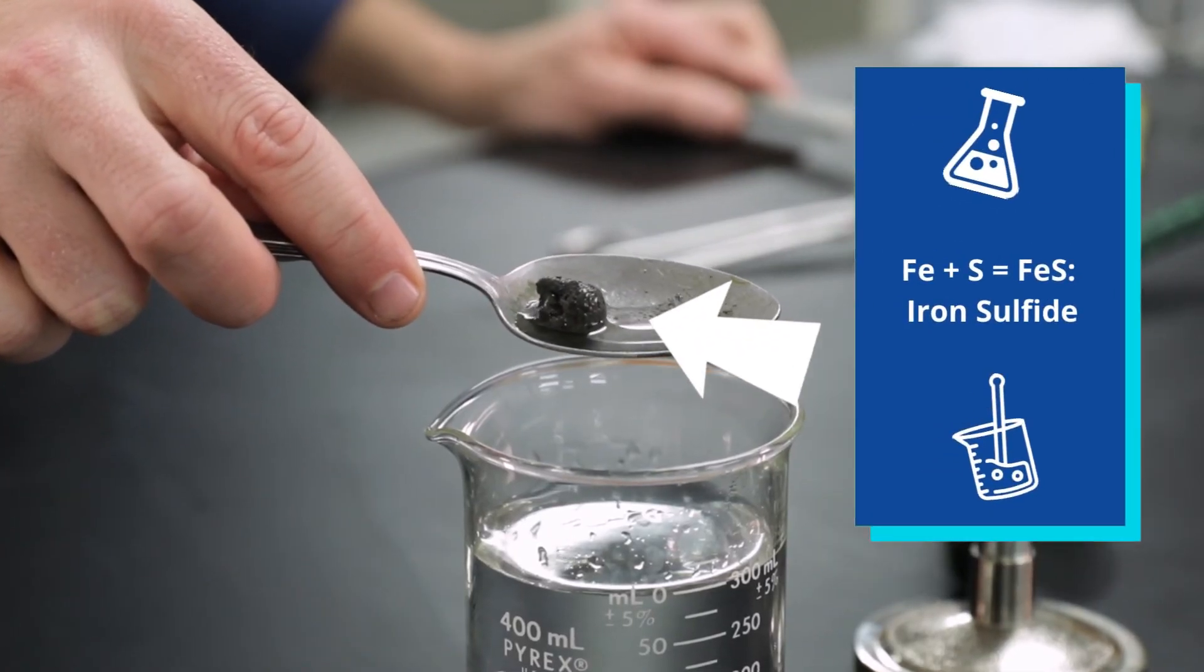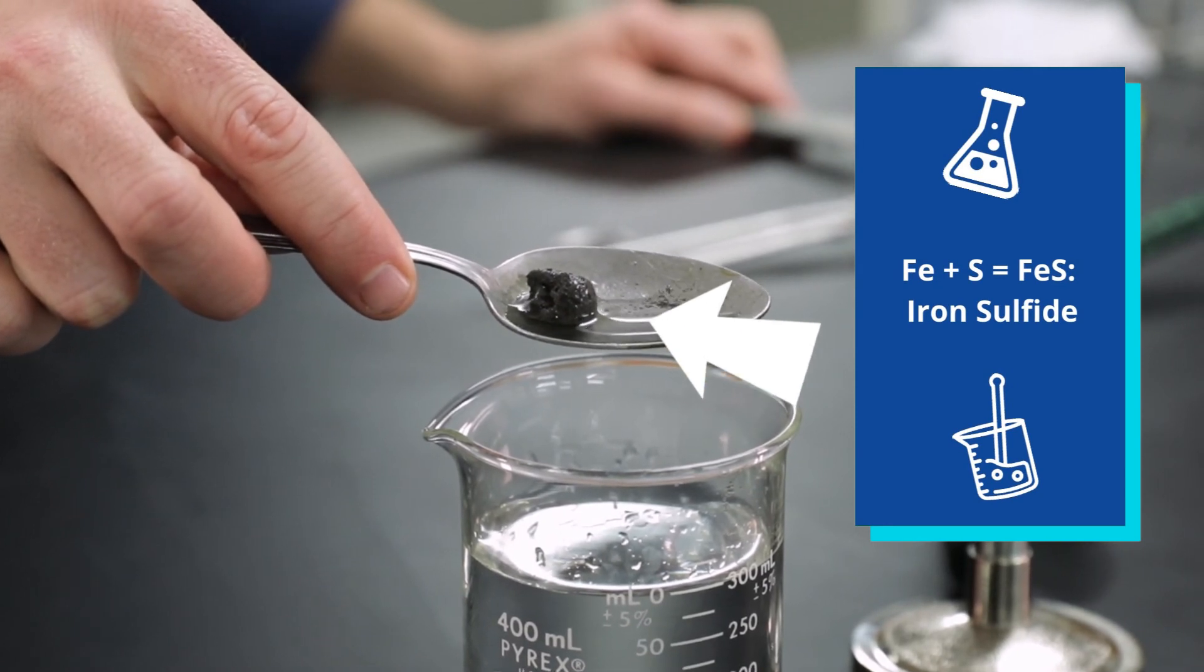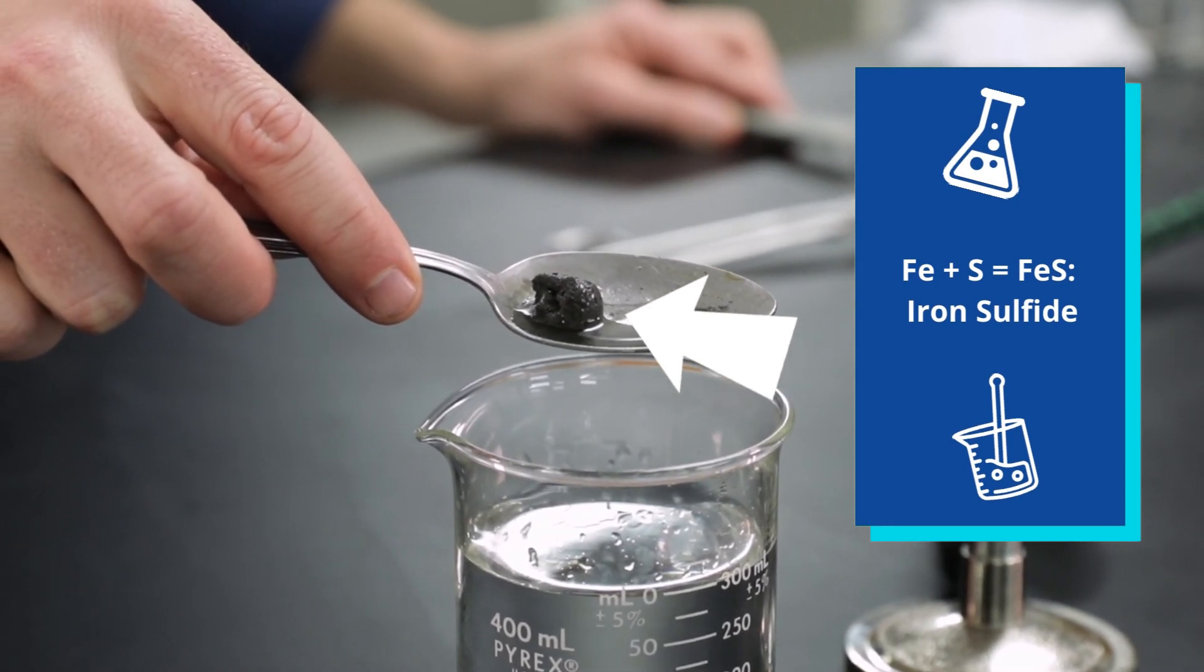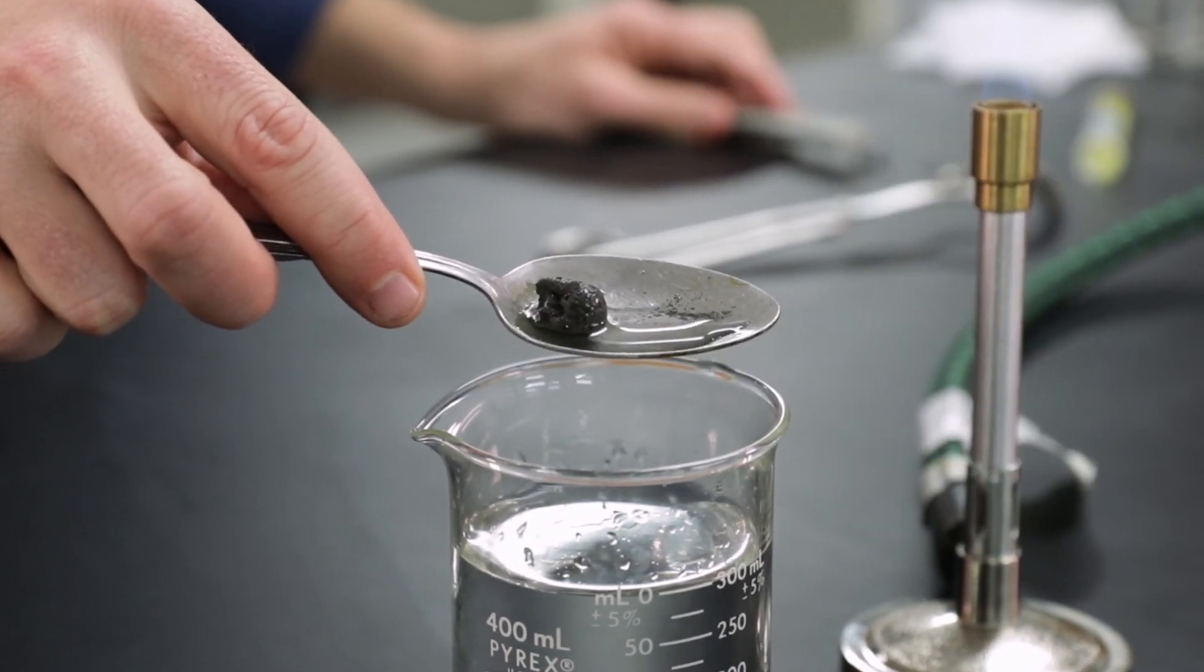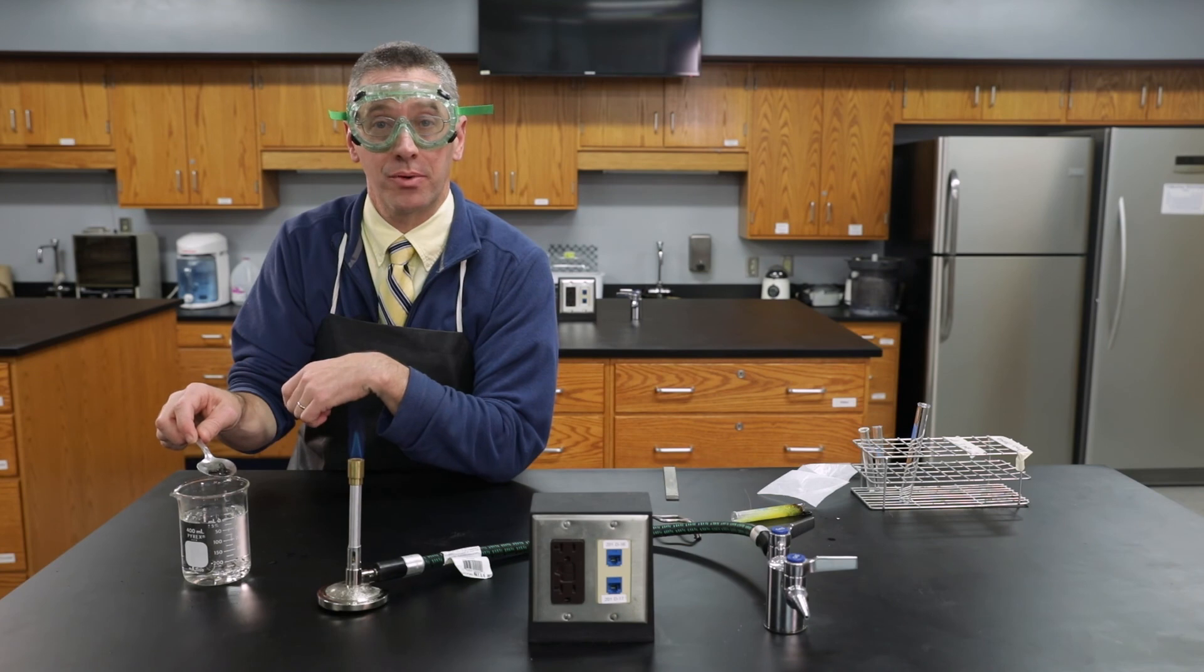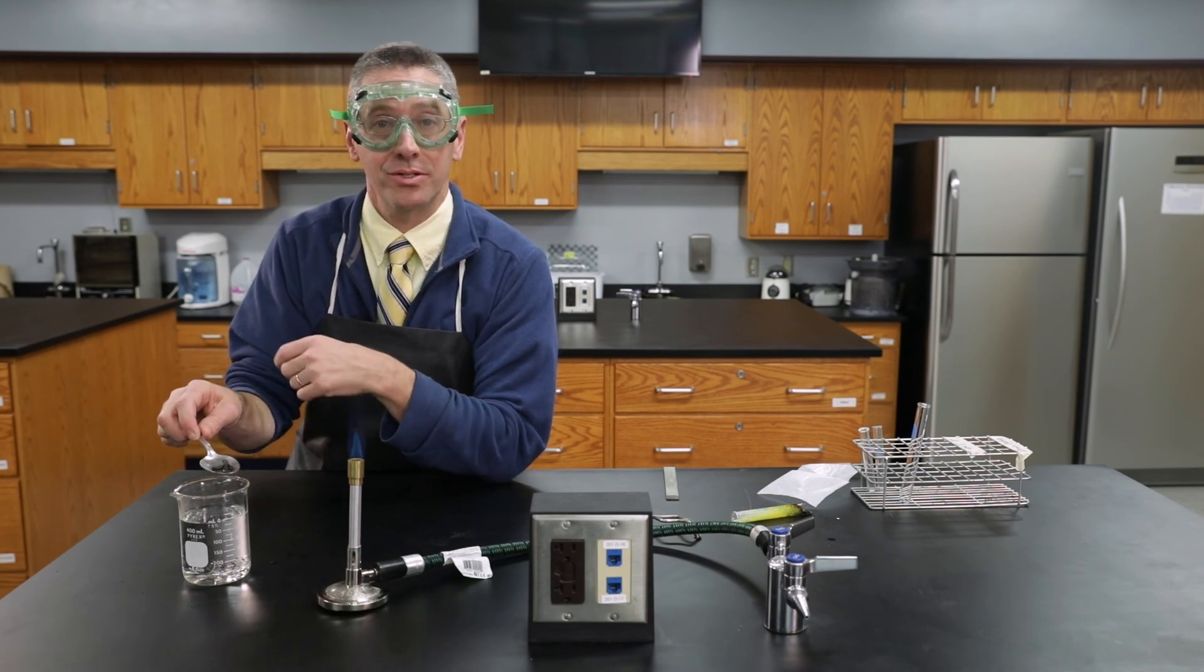Now you can see the iron sulfide is not magnetic anymore and it's not yellow either. It doesn't have the properties of iron or sulfur because we've had a chemical change. Iron sulfide is a brand new product with its own set of properties. This was a synthesis reaction.